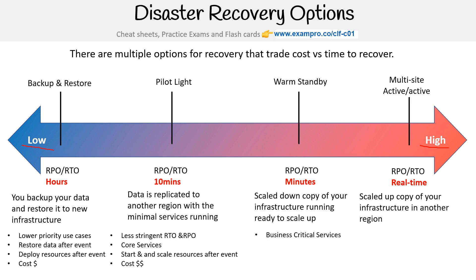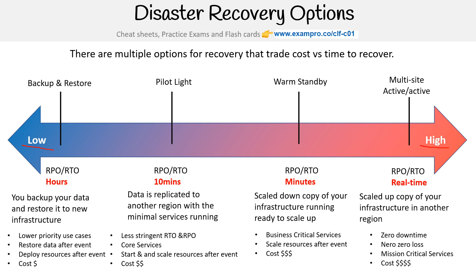Warm standby is good for business-critical services — you scale resources after the event, and it's costly but not as expensive as multi-site active-active. Multi-site active-active gives you zero downtime and near-zero data loss. It's great for mission-critical services, but it's just as expensive as your original infrastructure, so you're basically doubling the cost.